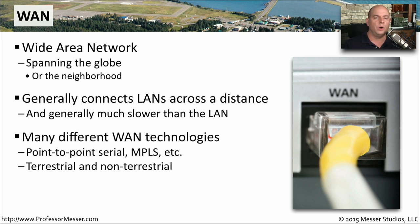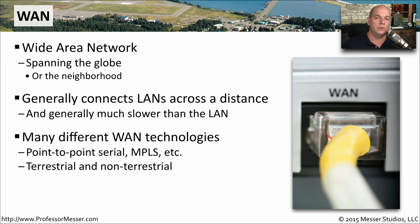For a Wide Area Network connection, there's no single way to do this. You might configure a point-to-point connection with T1s or E1s, or it might be MPLS being used to communicate over the WAN. You might be using a terrestrial link with a wired connection between sites, or it might be a non-terrestrial link where all communication occurs through a satellite connection.